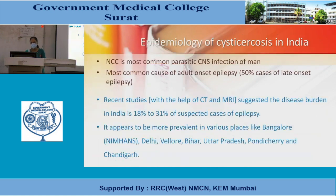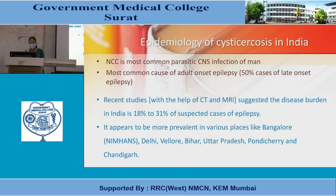Epidemiology of cysticercosis in India: it is the most common parasitic CNS infection of men and the most common cause of adult-onset epilepsy. Recent studies suggest cyst burden in India is 18–31% of suspected cases of epilepsy. More prevalent in Bangalore, Delhi, Ballor, Bihar, UP, Pondicherry, and Chandigarh.